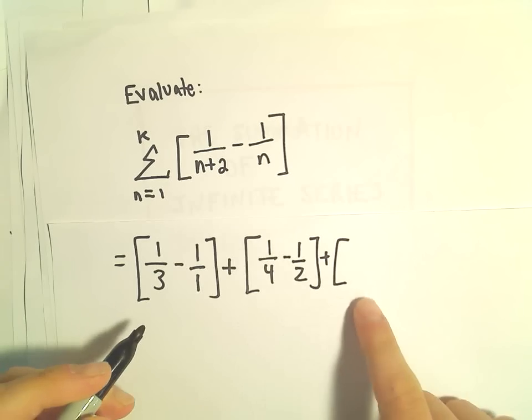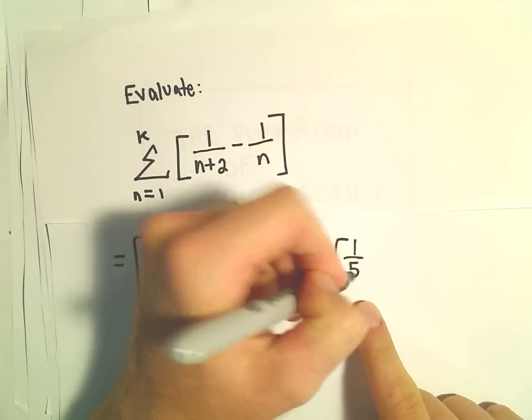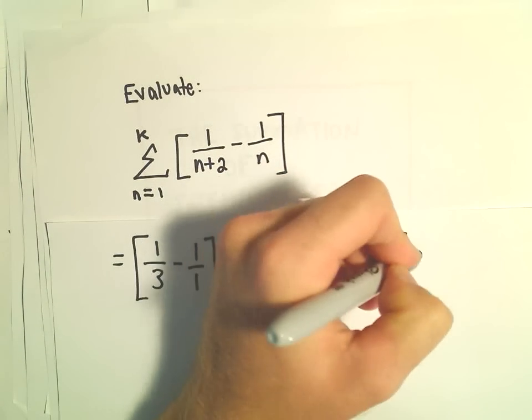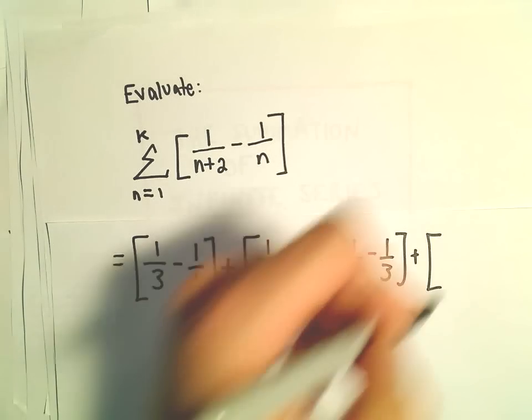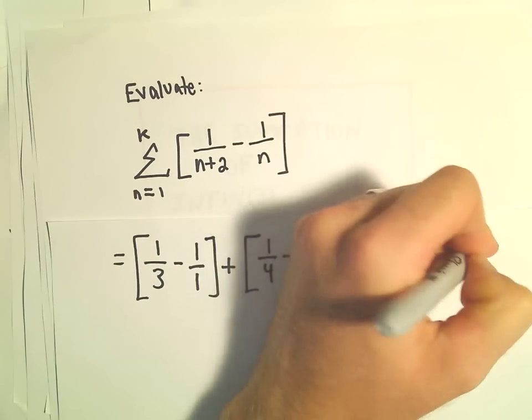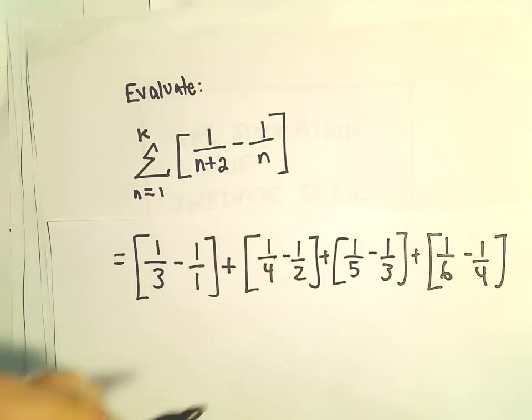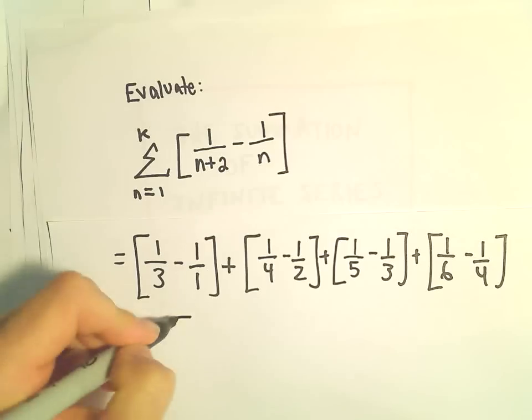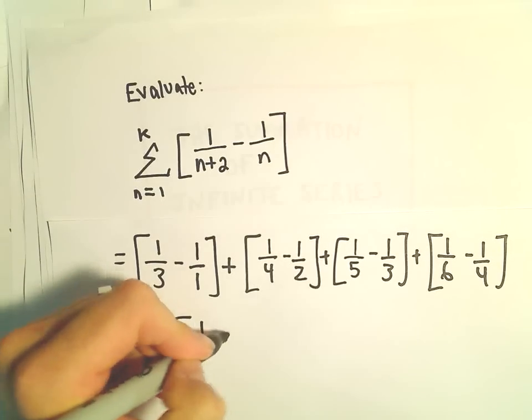Plug in n equals 3, we'll have a fifth minus a third. I'm going to plug in a couple more. If we plug in n equals 4, we'll have a sixth minus a fourth. Maybe one more. Then we'll have a seventh minus a fifth.